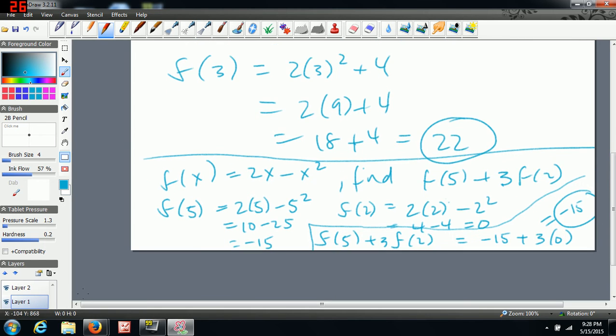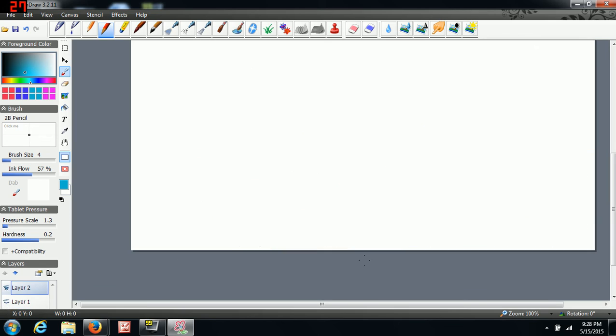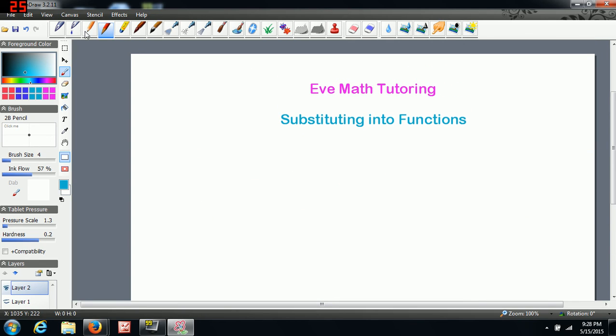I'm going to do one more example. Say you've got something like the following. So f of x, y is equal to 3x plus 2y squared minus 4. And you're asked to find f of 2, 3. So this is your x and your y.